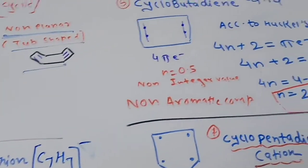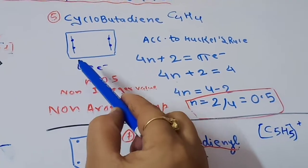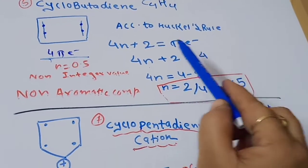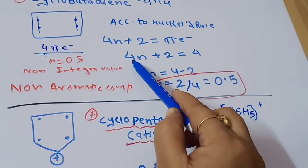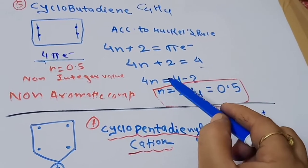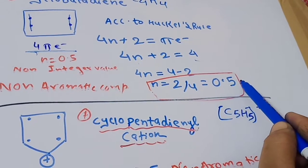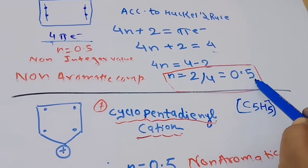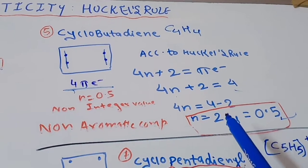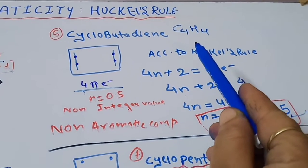Another example is cyclobutadiene, which has 2 double bonds — a 4 pi electron system. Applying Huckel's rule: 4n+2 = 4 gives n = 2/4 = 0.5, again a non-integer fractional value. This compound does not obey Huckel's rule; hence cyclobutadiene is a non-aromatic compound. The must condition for aromaticity is that n must be an integer value, not a fractional value.